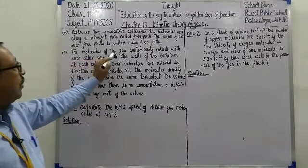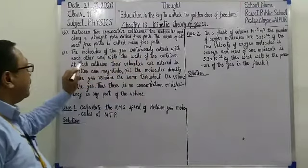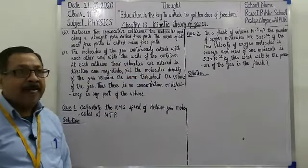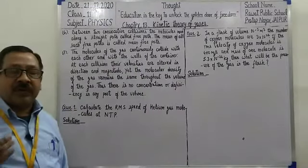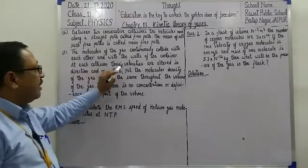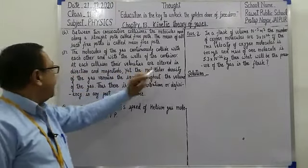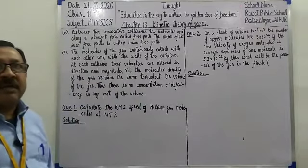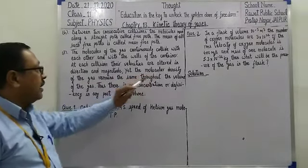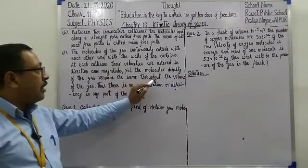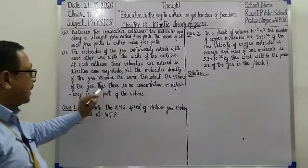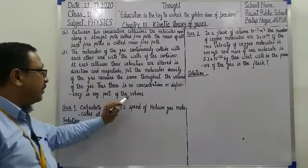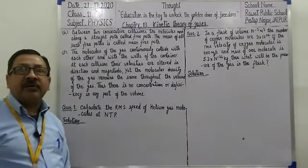Number seven: the molecules of the gas continuously collide with each other and with the wall of the container. یعنی gas جس container میں filled ہوتی ہے، اس container کی دیوار سے اور each particle سے collision کرتی ہے، اور وہ collision perfectly elastic ہوتی ہے۔ At each collision, their velocities are altered in direction and magnitude. And the molecular density of the gas remains the same throughout the volume of the gas — thus there is no concentration or deficiency in any part of the volume.